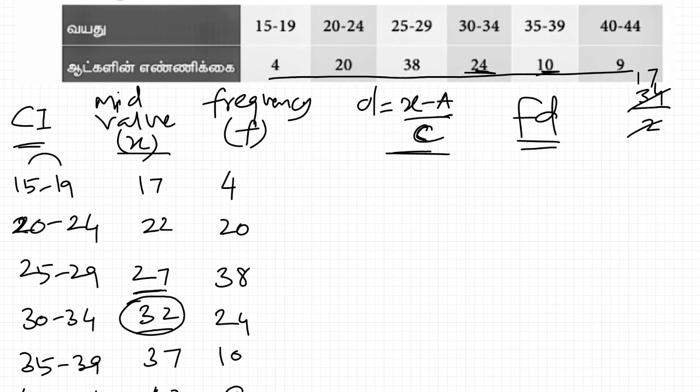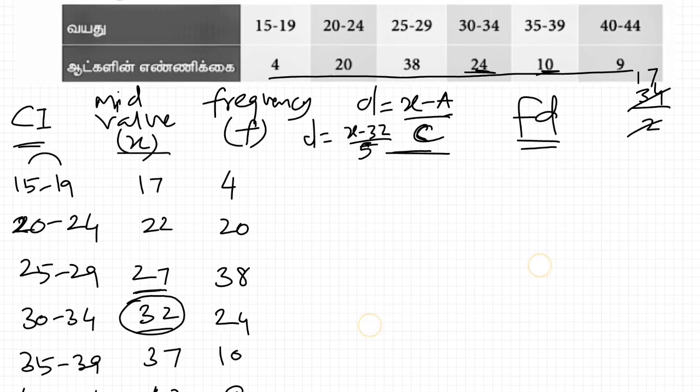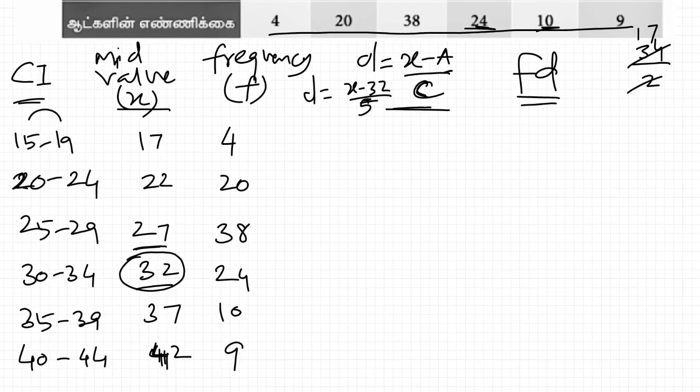D is equal to x minus a by c. So this would be x minus 32 by 5. For mid value 17, it's 17 minus 32 by 5. 17 minus 32 is minus 15, divided by 5 is minus 3.